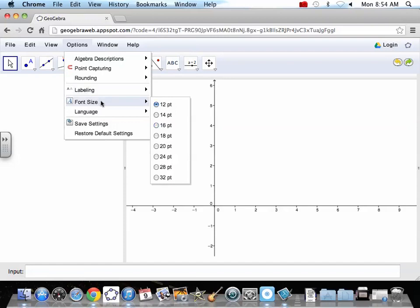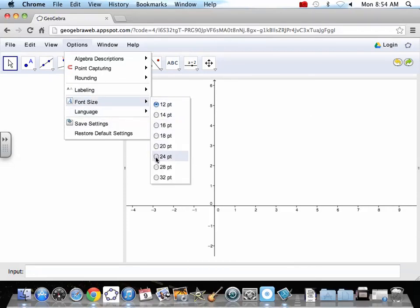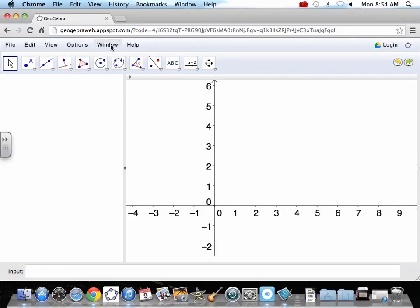Options - the thing I use most in options is font size, make it larger for us to see some things. New window when you want new stuff. GeoGebraTube is a great thing to look at. It's people who have created lessons and ideas and drawings to check out.